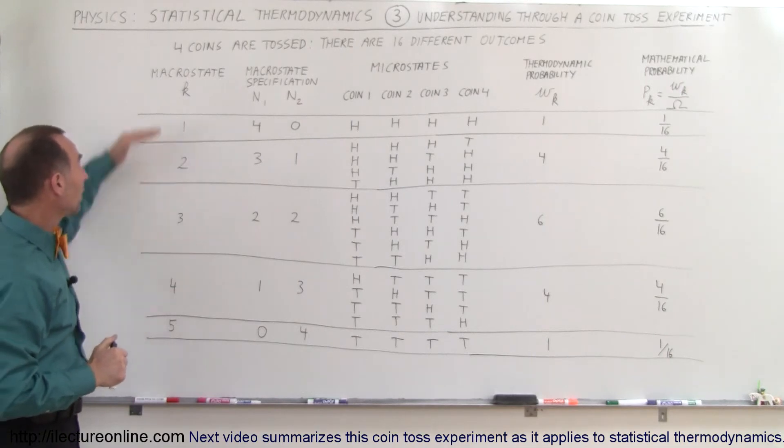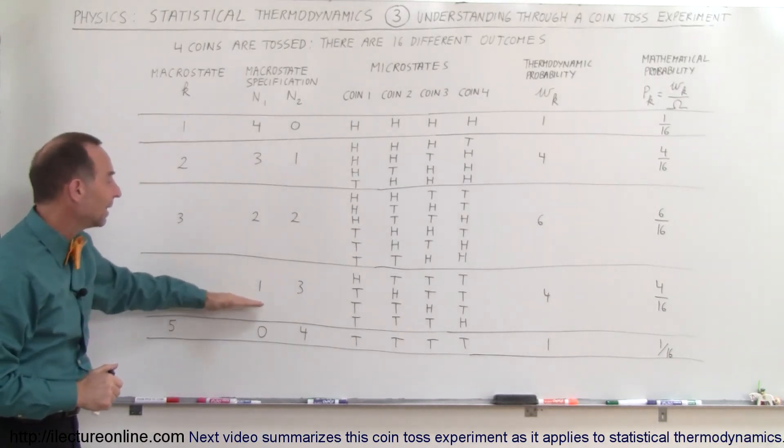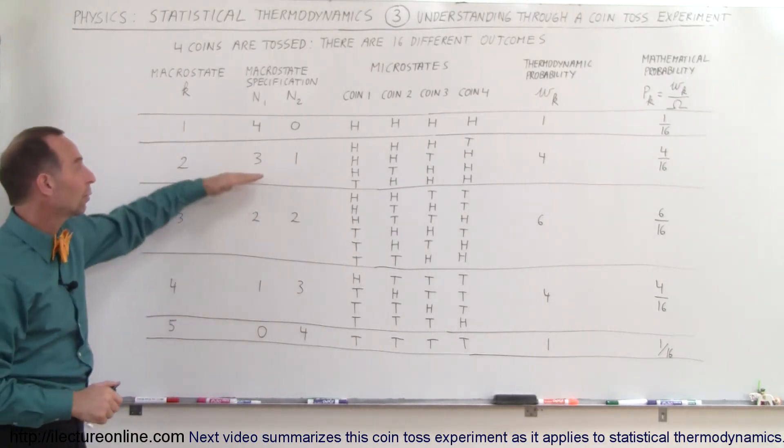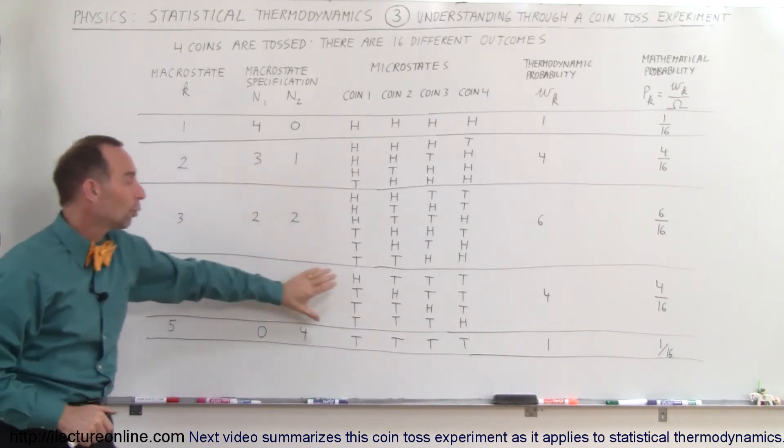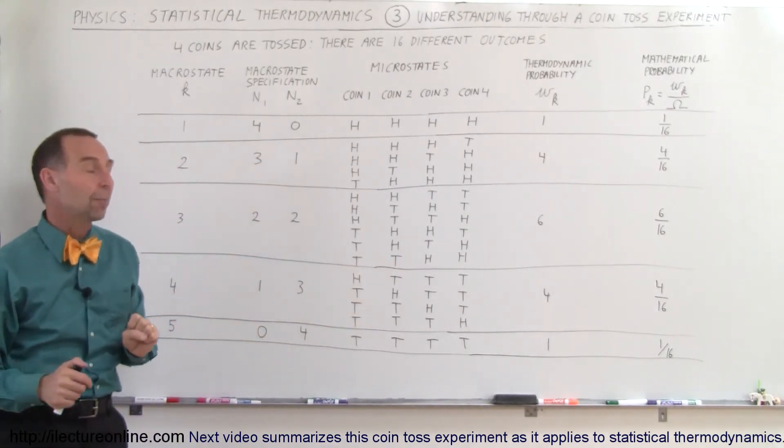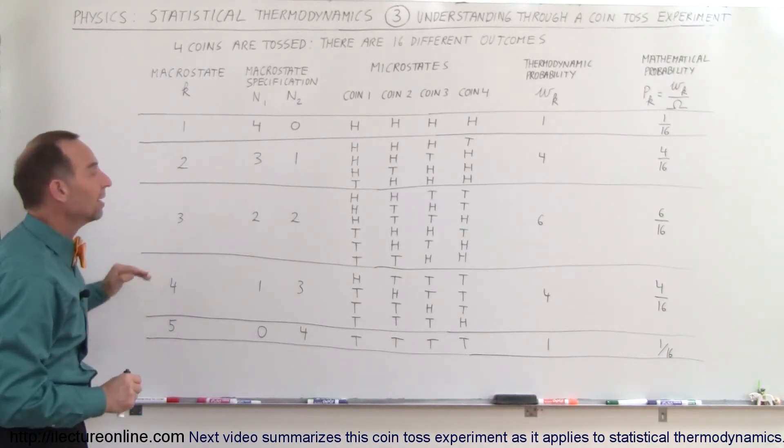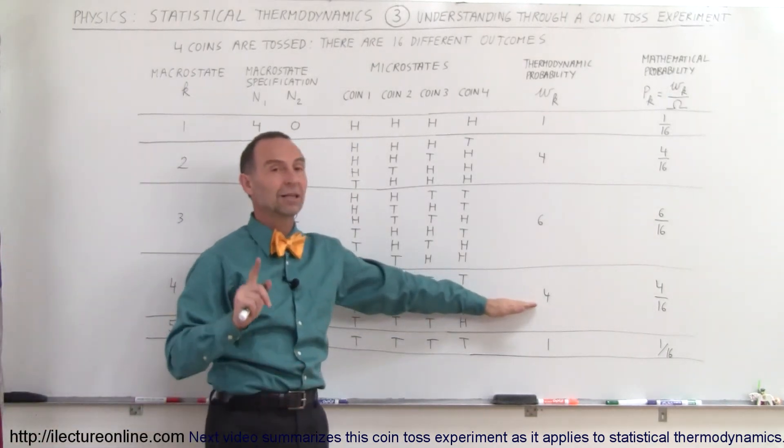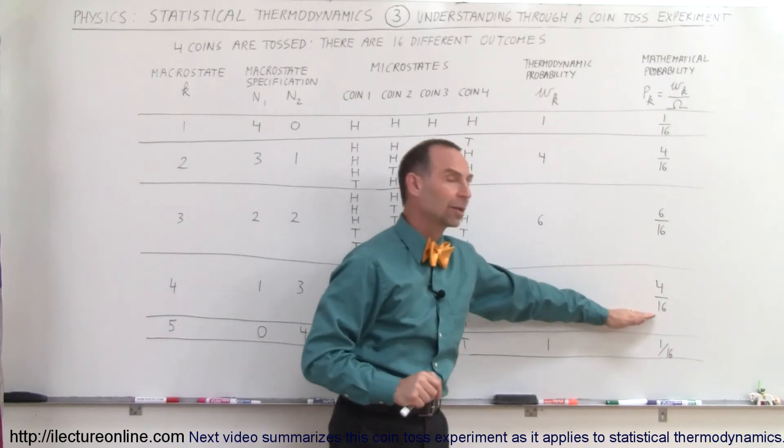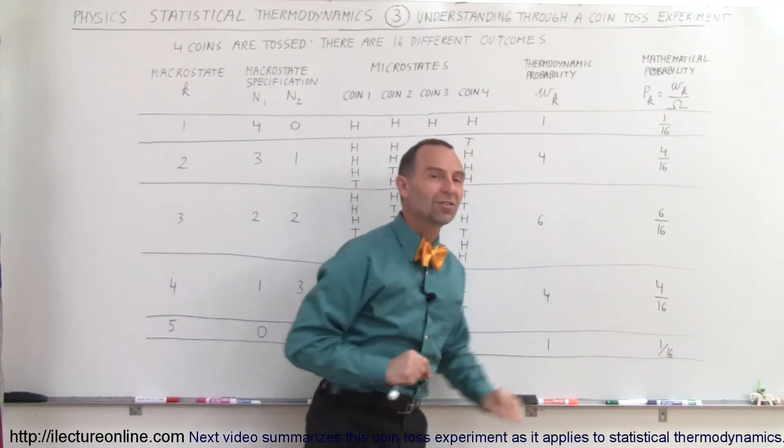Now, the fourth macro state is where we have one head and three tails. Again, just like with three heads and one tail, there's four different combinations that can make that happen. Therefore, there's four micro states in that particular macro state. Therefore, thermodynamic probability is 4, and the mathematical probability is four out of 16 outcomes.